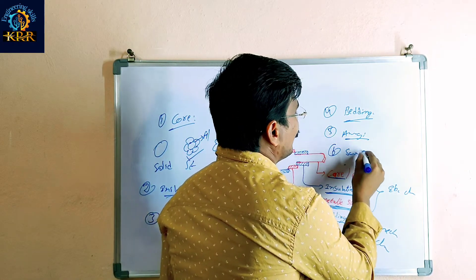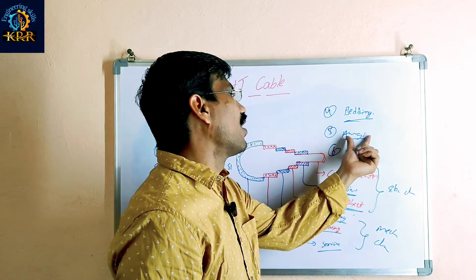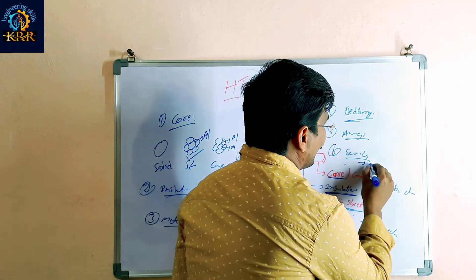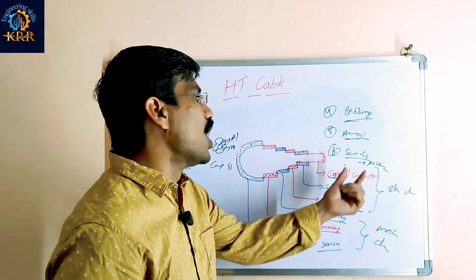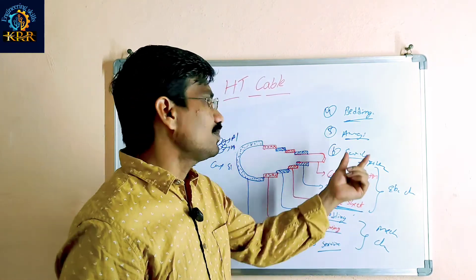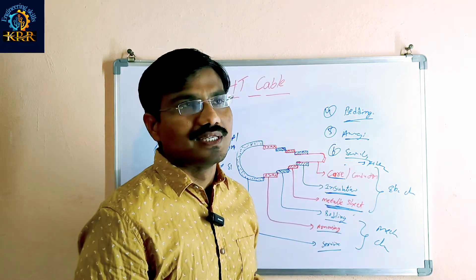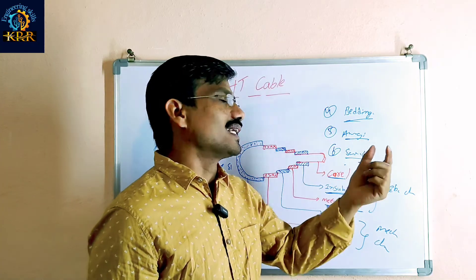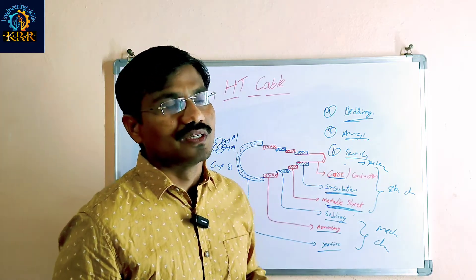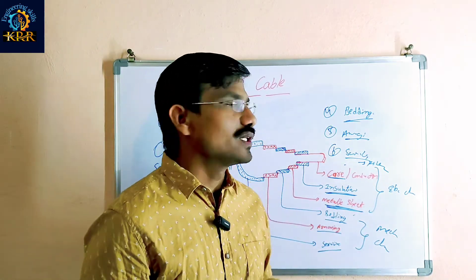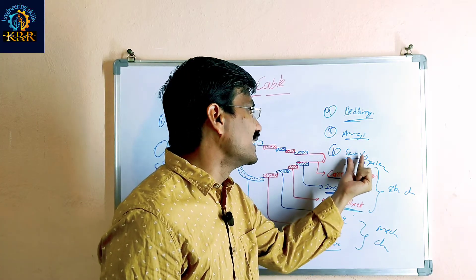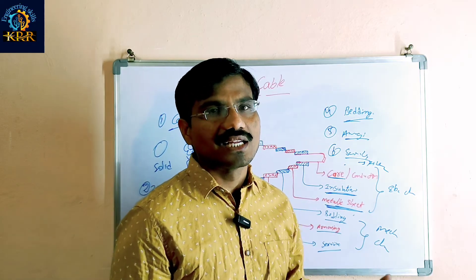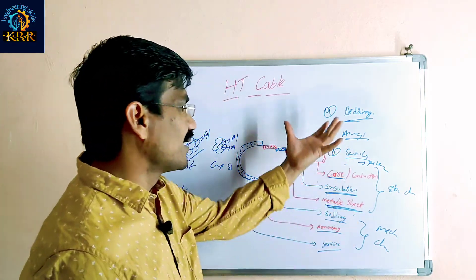The sixth one is the servicing. The purpose of servicing is protection for the armouring. This layer is made up of fiber material. Since armouring is a metal item, if outside moisture enters and touches this metallic material, corrosion will happen. To protect against that, this servicing layer made of fiber material is useful.